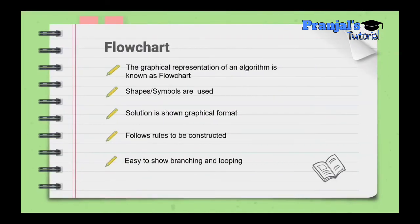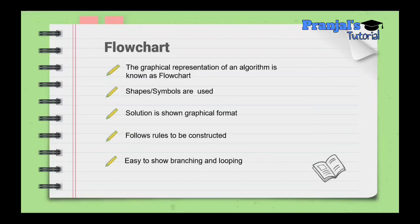Flowchart: the graphical representation of an algorithm is known as a flowchart. In a flowchart, different shapes and symbols are used, and the solution is shown in graphical format. Flowcharts follow specific rules to be constructed, using standard processor and decision symbols. It is easy to show branching and looping statements in a flowchart, unlike in an algorithm.